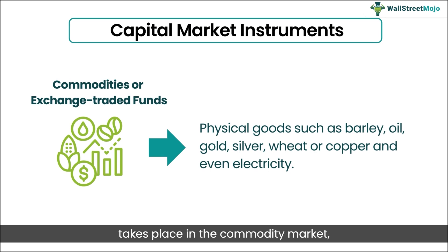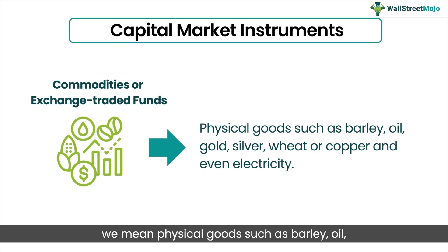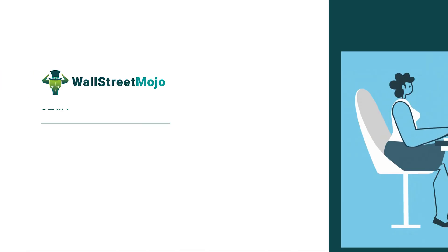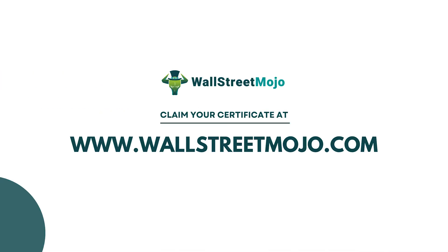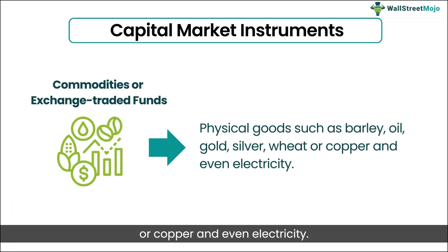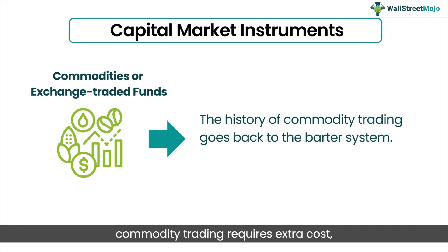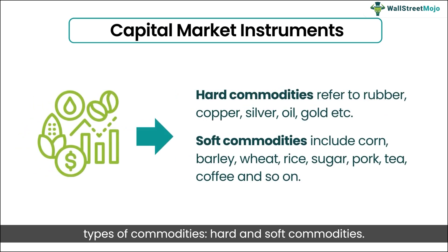Commodity trading takes place in the commodity market. By commodity, we mean physical goods such as barley, oil, gold, silver, wheat, copper, and even electricity. The history of commodity trading goes back to the barter system. Today, commodity trading requires extra cost. There are generally two types of commodities: hard and soft commodities.